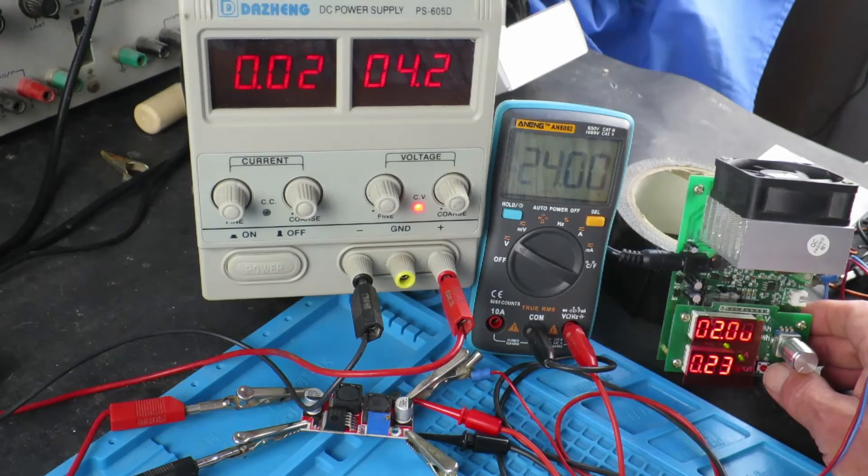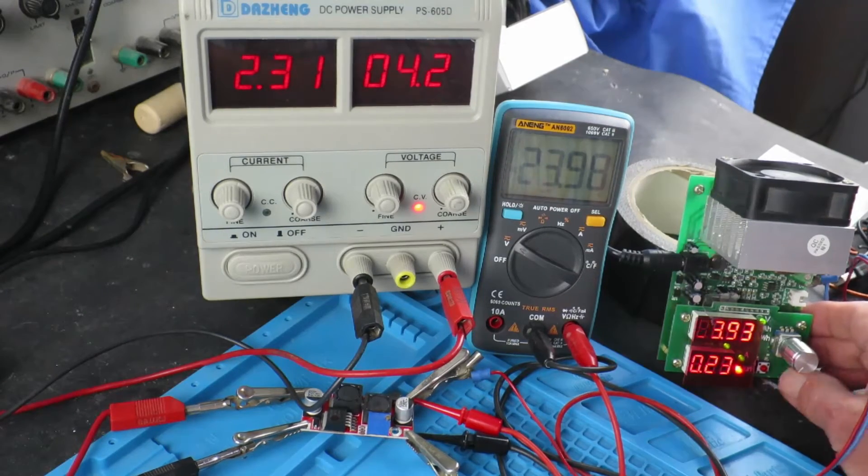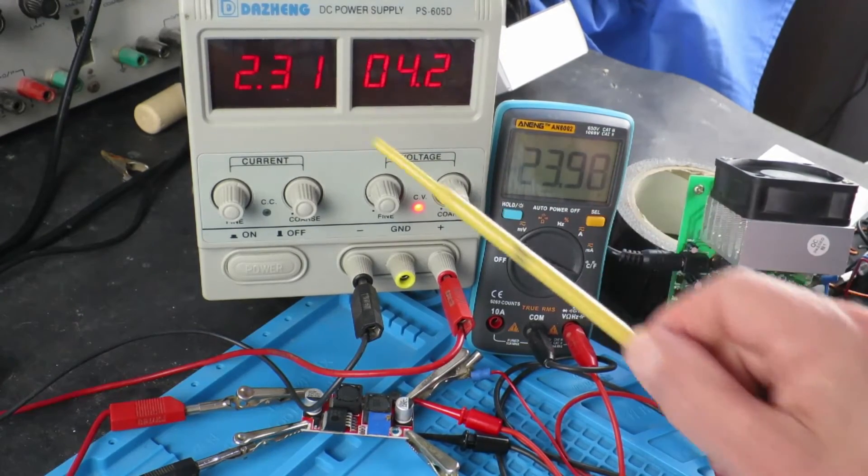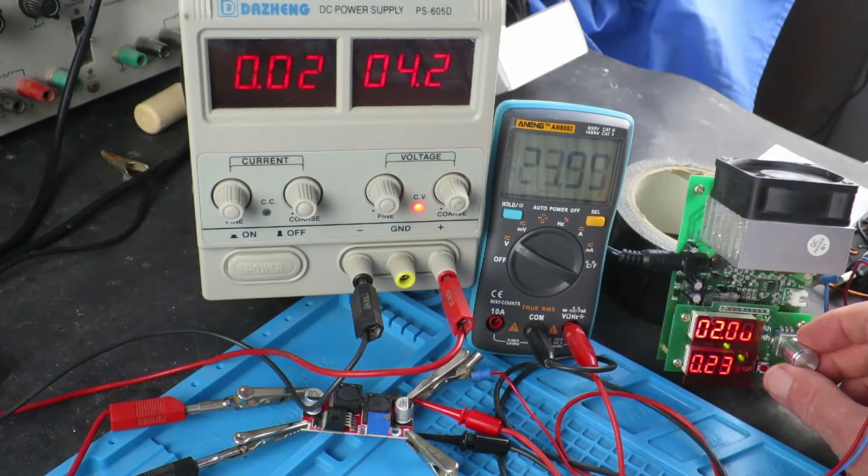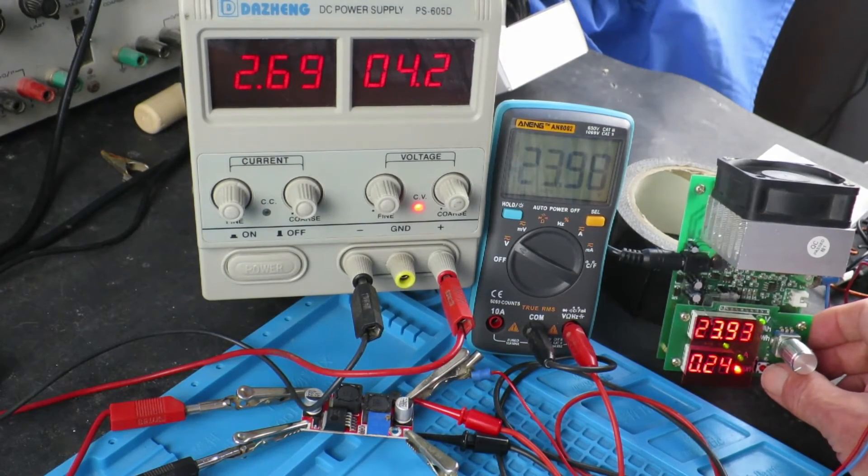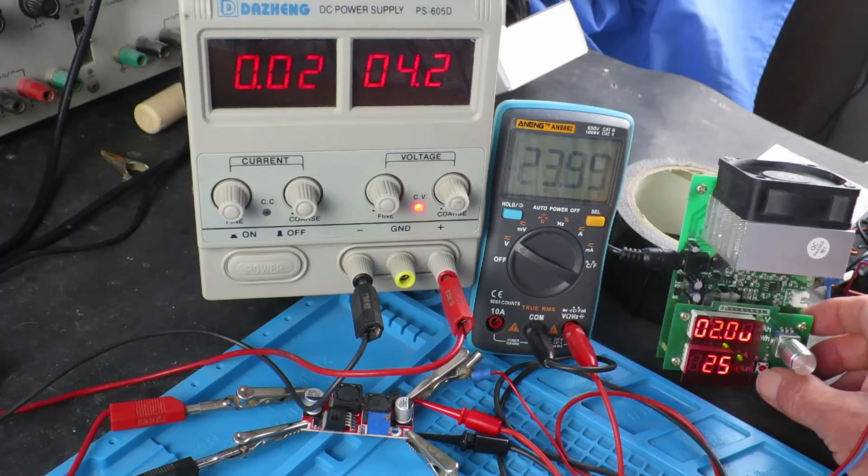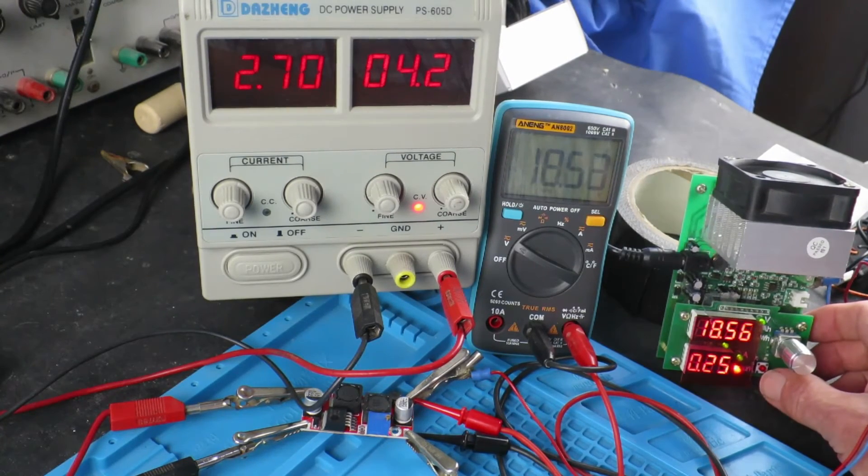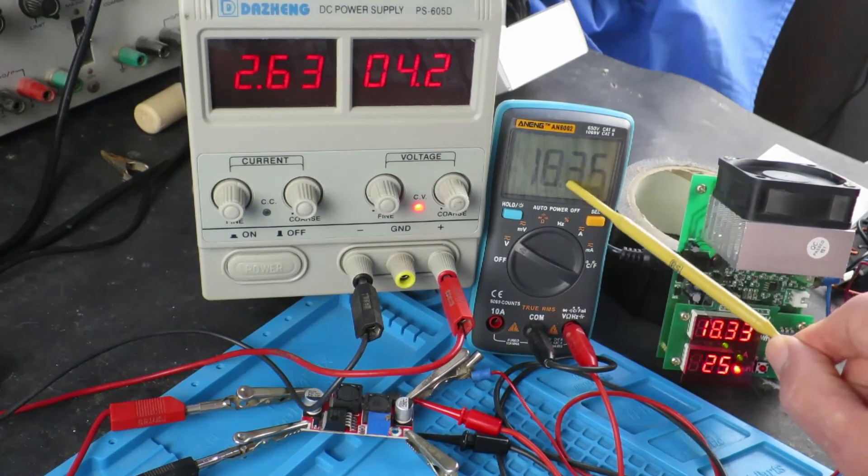If we now go up to 230 milliamps we can see that the input current is now some 2.3 amps. Now I think this board is rated up to 3 amps. We'll go up to 240, that's 2.7 amps on the input.